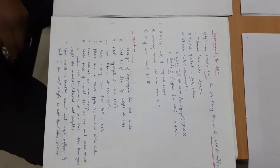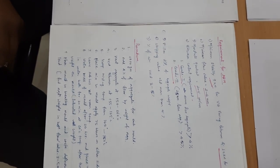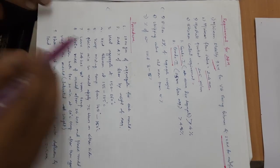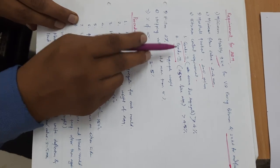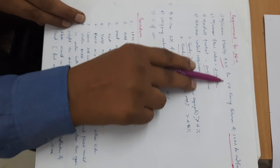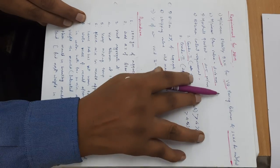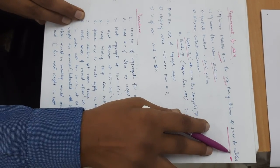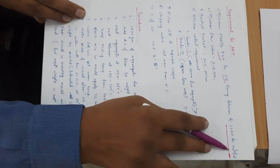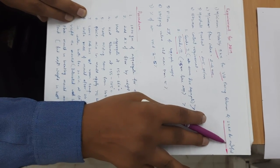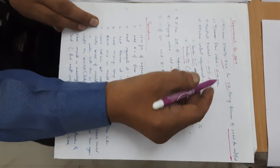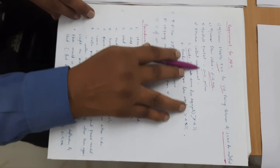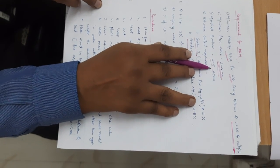Now we are going to design the Dense Bitumen Macadam (DBM). This is one layer that will be used for the flexible pavement. For DBM, the requirements are: minimum stability is 9 kN for VG (viscosity grade) paving bitumen, and 12 kN for modified bitumen. Modified bitumen means if you are adding some ingredient to the natural bitumen, that will be called modified bitumen. Minimum flow requirements should be between 2 to 4 mm only. Marshall quotient will be between 2 to 5 kN per millimeter.